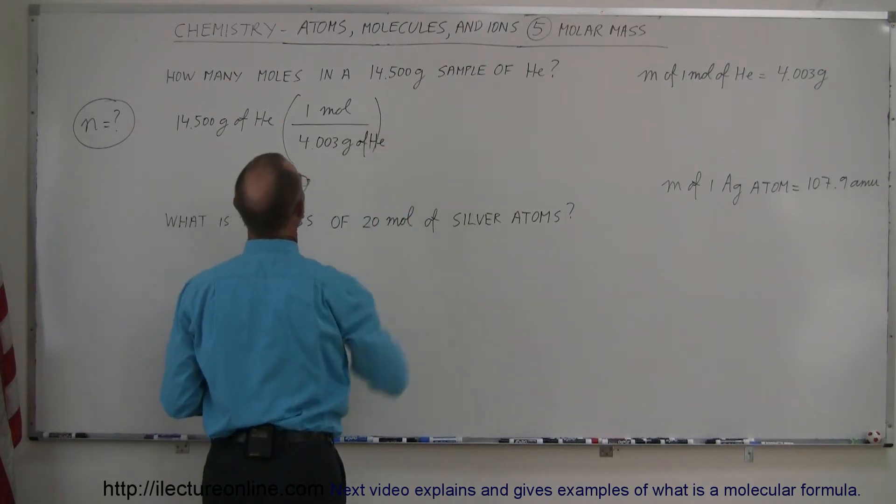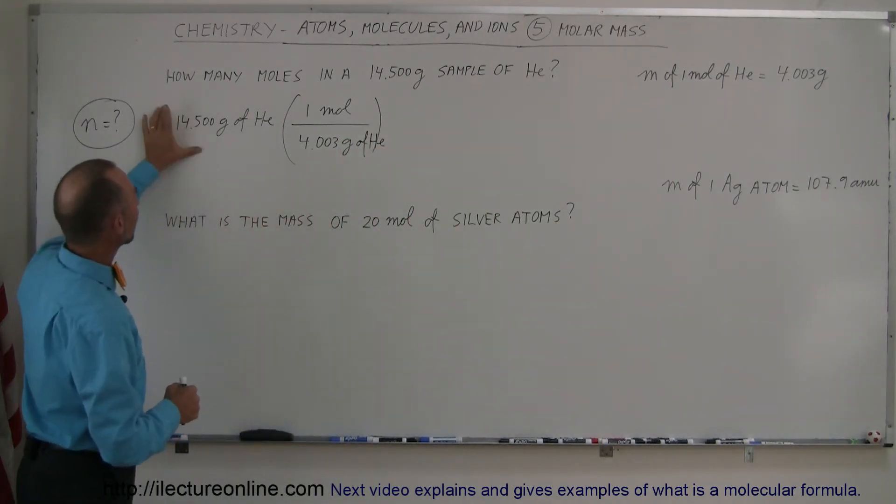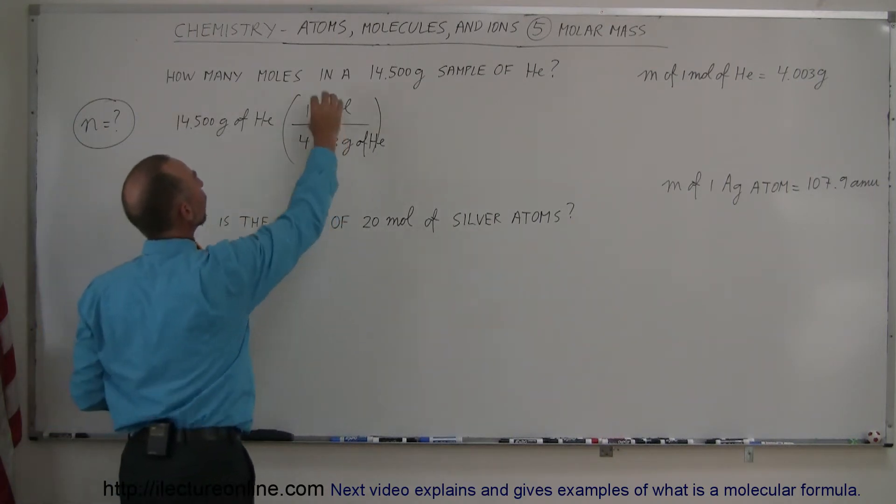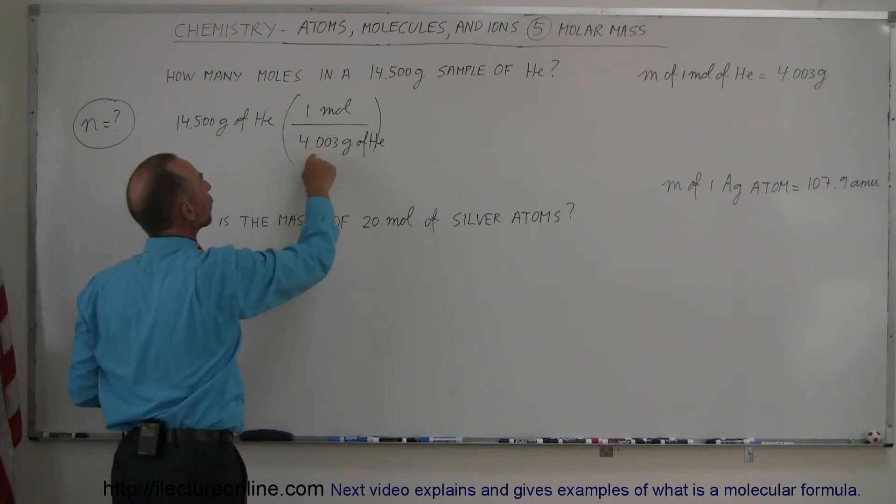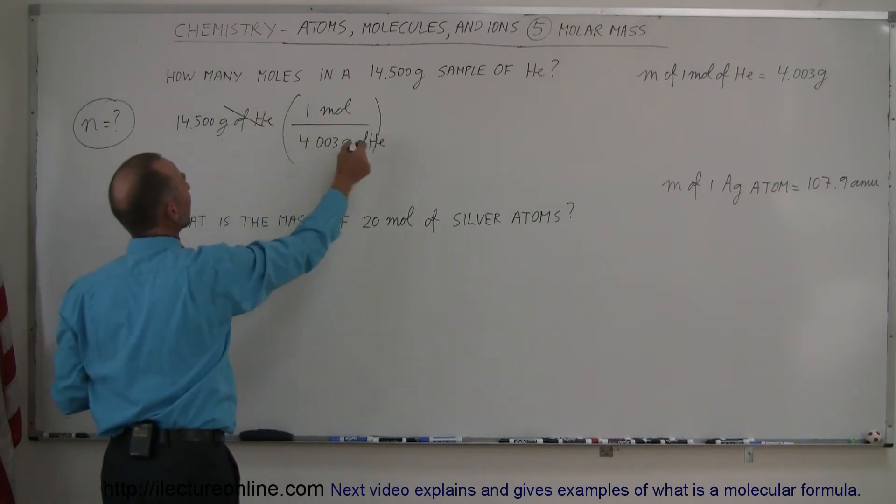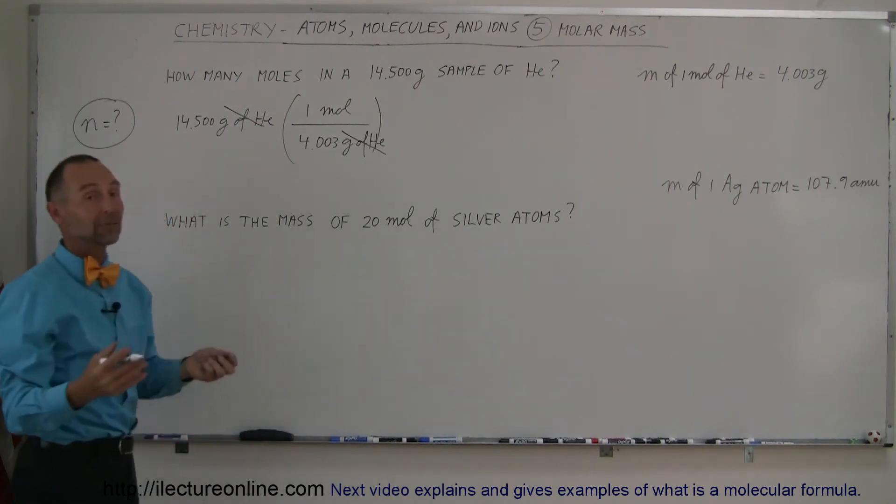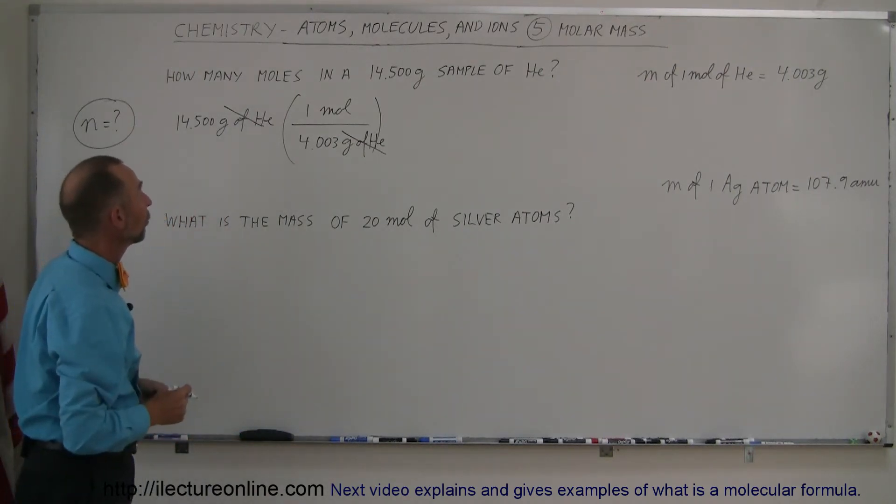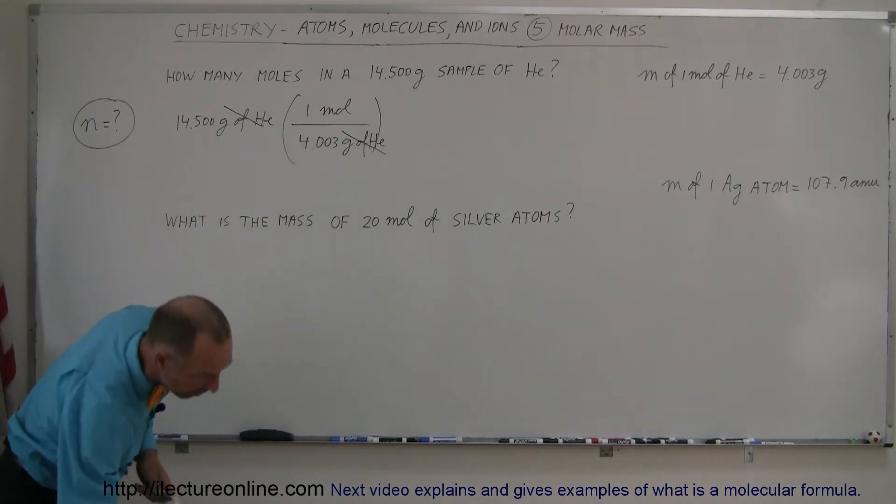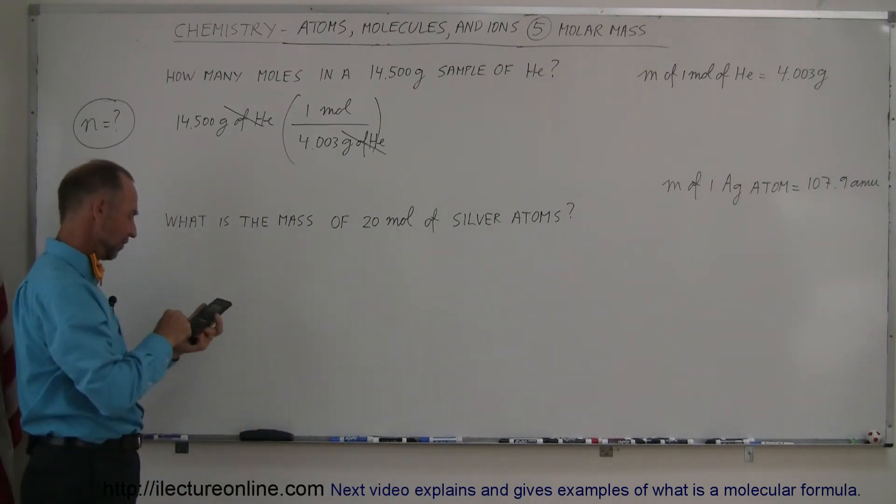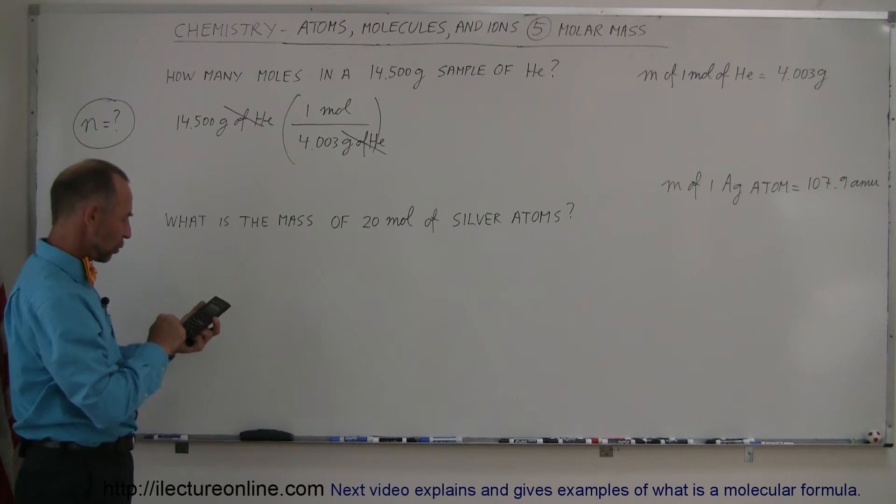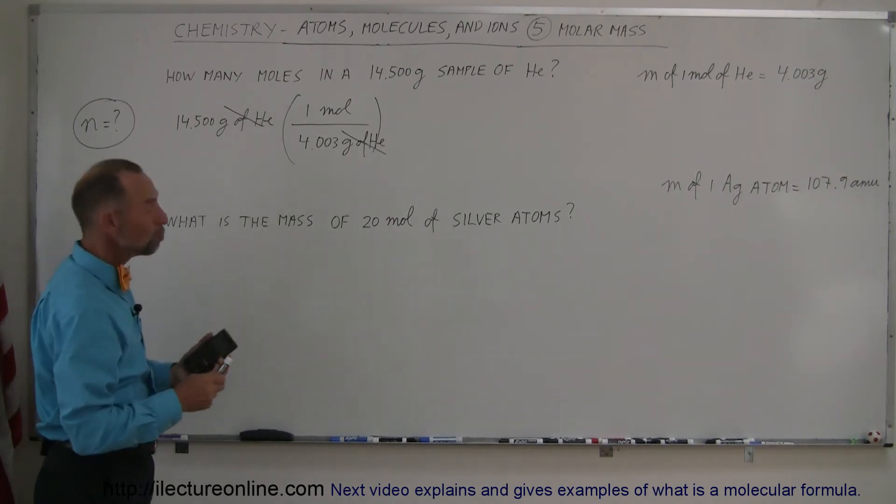So what we take is we take our sample of helium, 14.5 grams, and multiply times the ratio that one mole is equal to 4.003 grams of helium. Now notice that grams of helium and grams of helium cancel out, and we're left with the number of moles, which is what we're looking for. So what we need to do now is take the 14.5 and divide it by 4.003, and we get 3.622 moles.